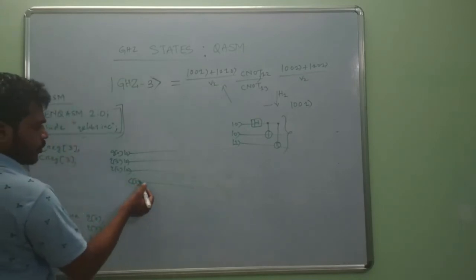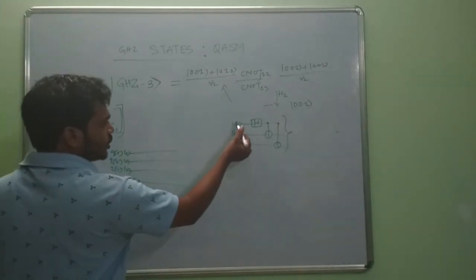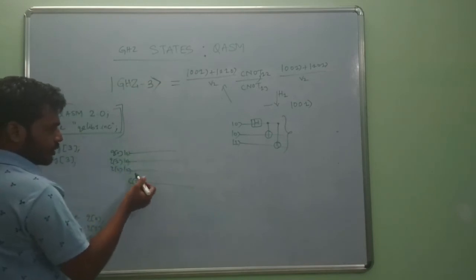C0, C1, C2. Now we have to prepare the state 001. So the first is in state 0, the second is in state 0, the third has to be in state 1. So we apply X gate.